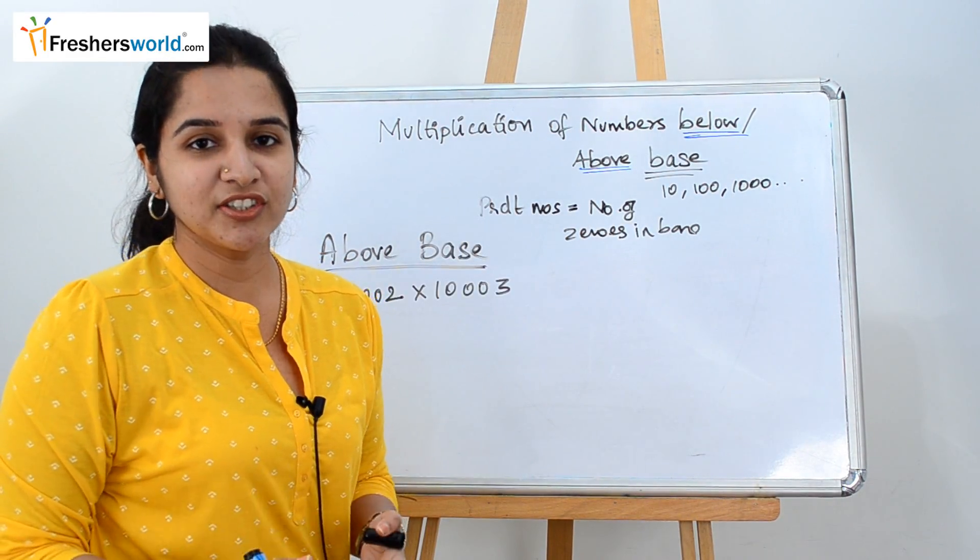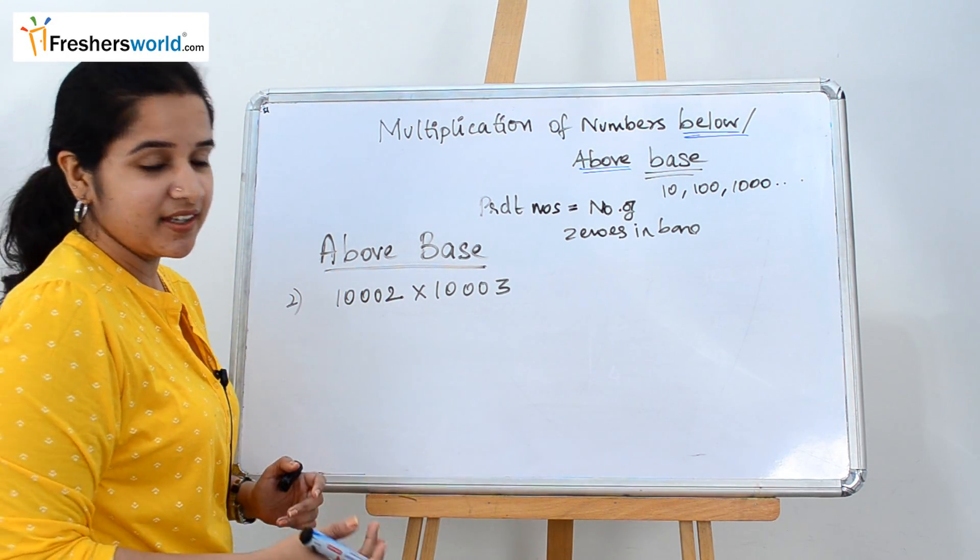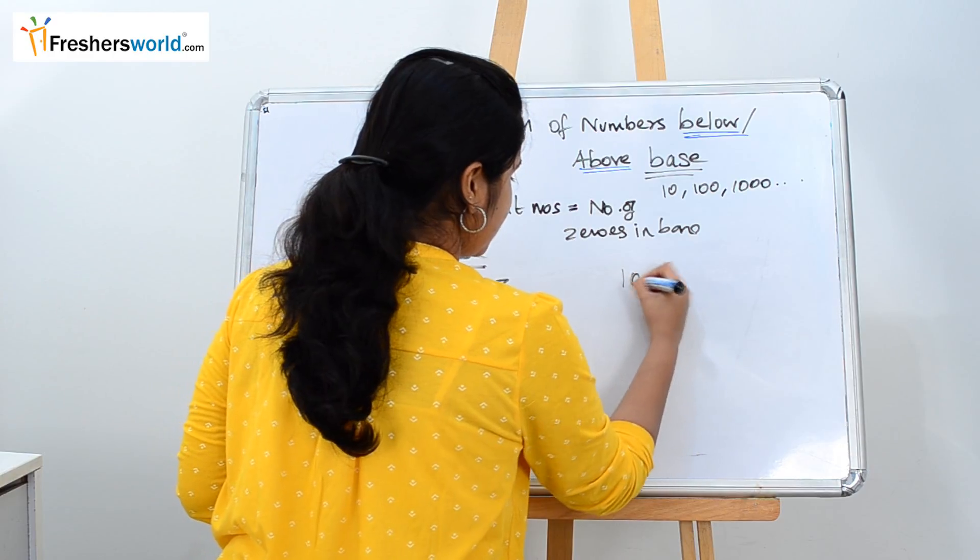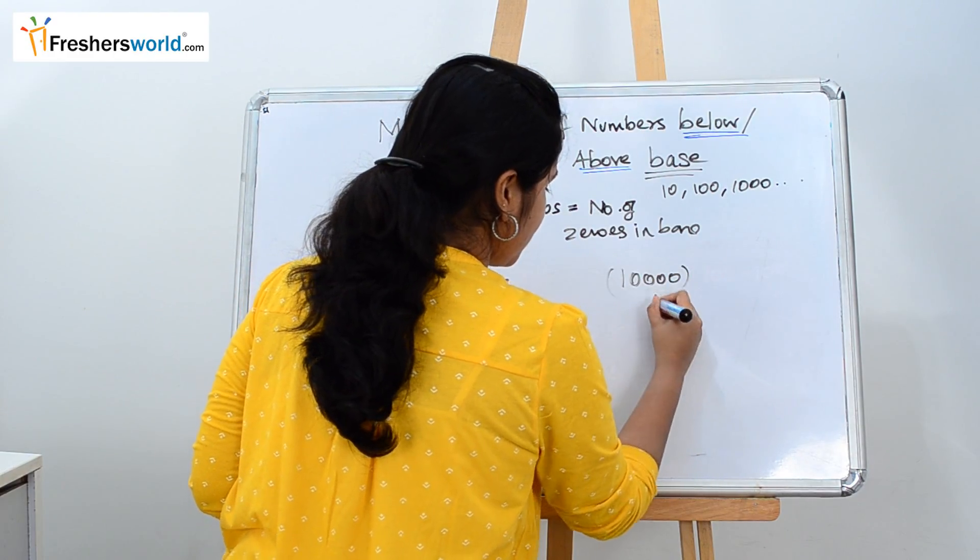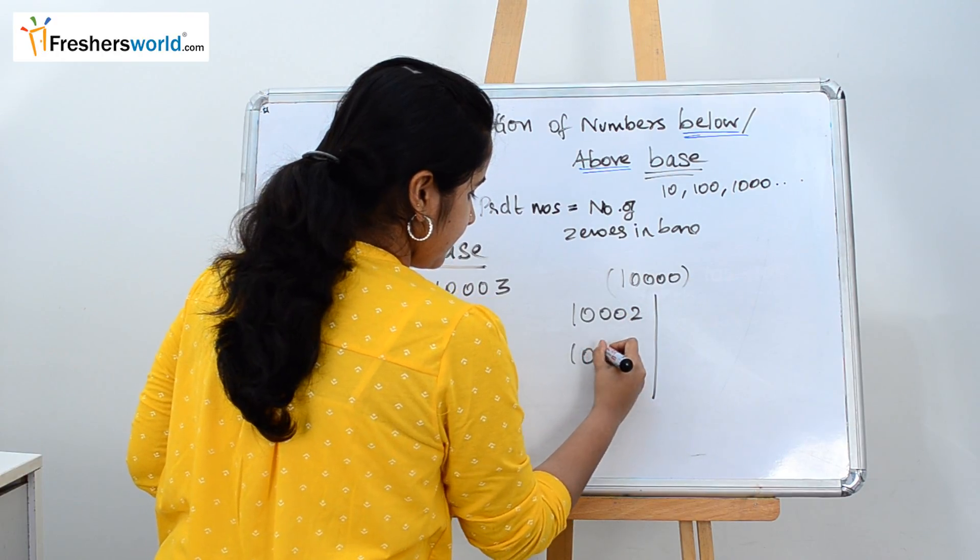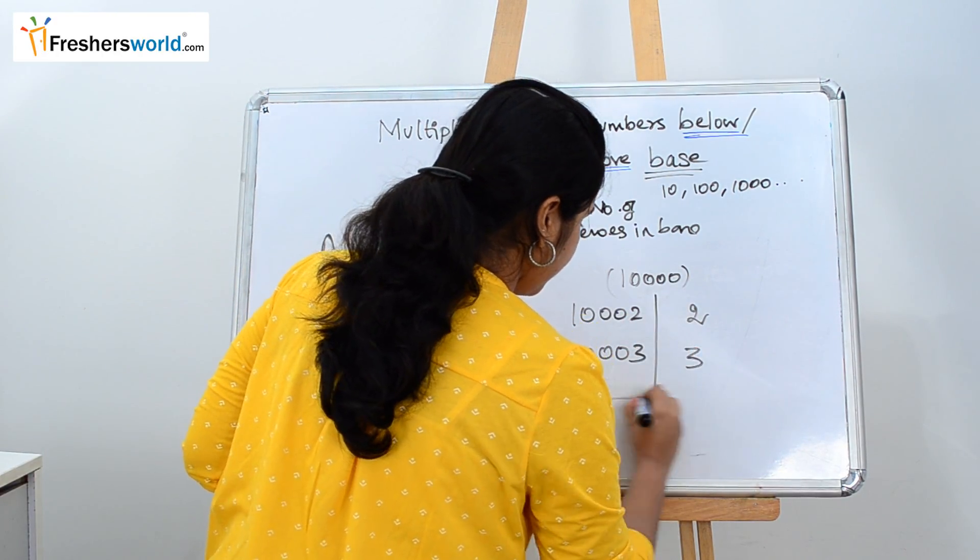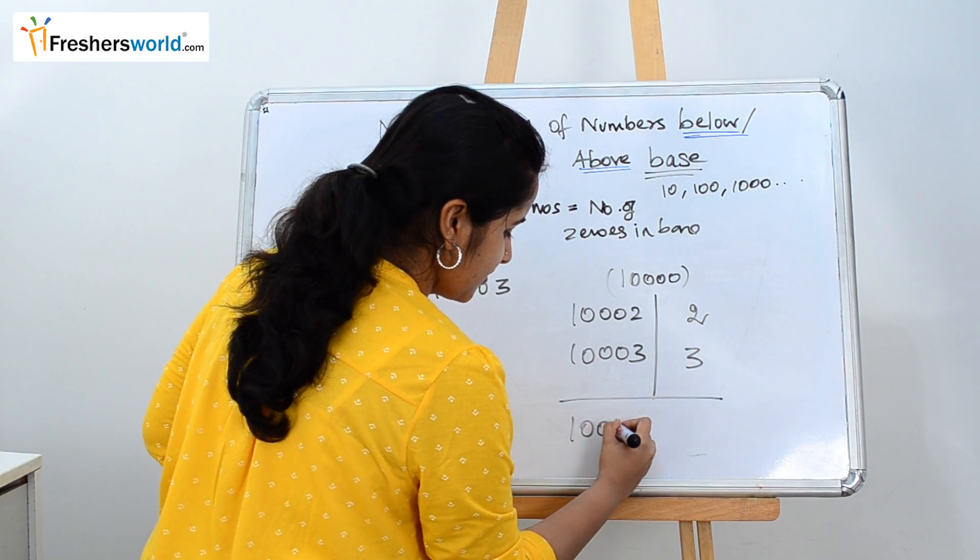Let's solve another problem. The second question that they have given is 1002 into 1003. What is the answer for that? Similarly follow the steps. Find the base which is closer to it. Write the numbers on your left hand side. On subtracting it you will get 2 and 3. Find the sum here which is 1005.